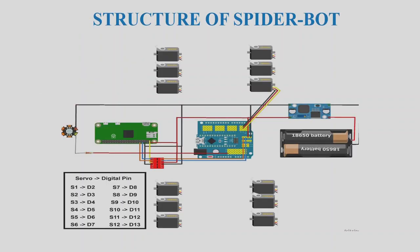You can see the 12 servo motors. They are directly connected to the extension board. The extension board connects to the Arduino Nano. The Raspberry Pi gives the main commands to the Arduino Nano, and the Arduino Nano sends signals to the 12 servo motors to operate, taking power from the battery.